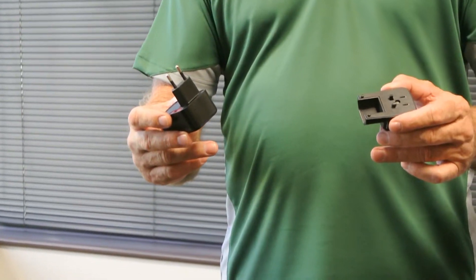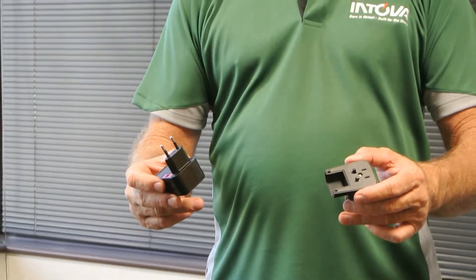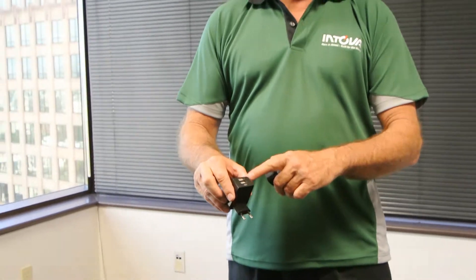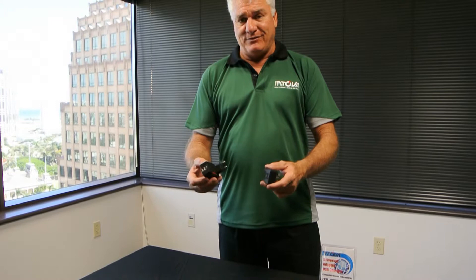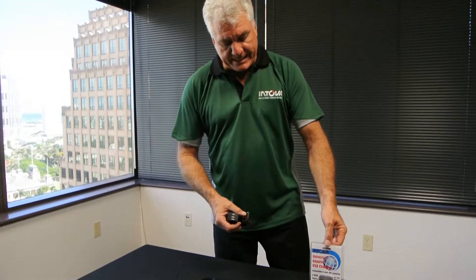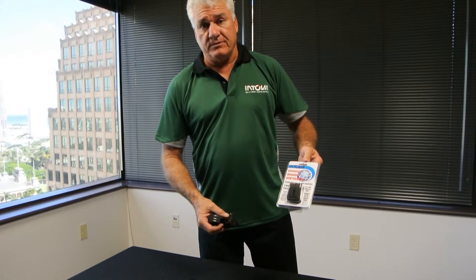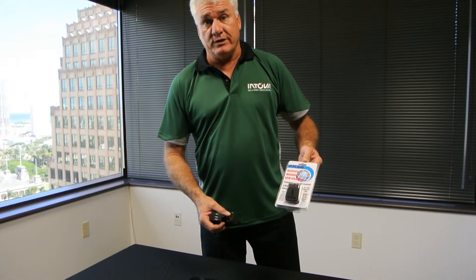So, one compact kit is a universal AC adapter, as well as a dual port USB charger. This is the most practical, fun product that we've made, and it's very inexpensive. Here's the packaging. It's called our USB charger.